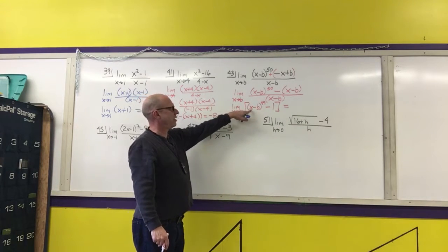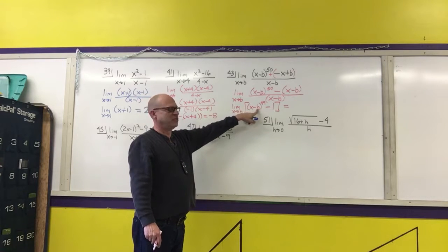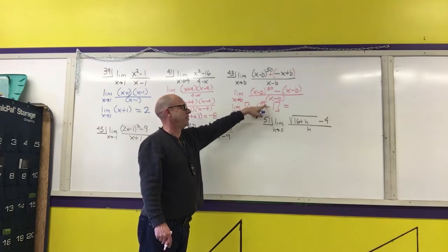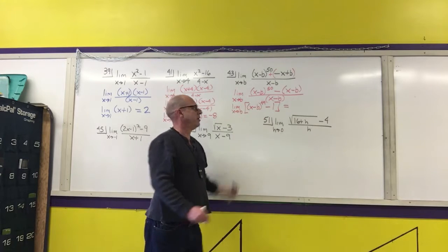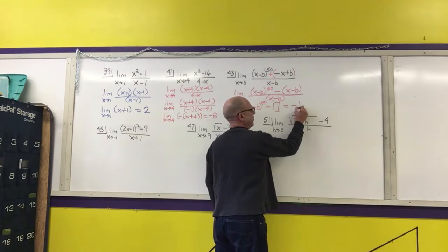If I put a b in for x, I get b minus b, which is 0, 0 to the 49th, which is 0, and 0 minus 1 is negative 1.